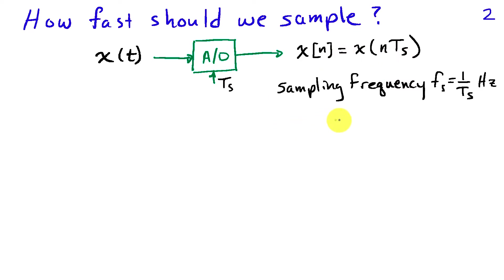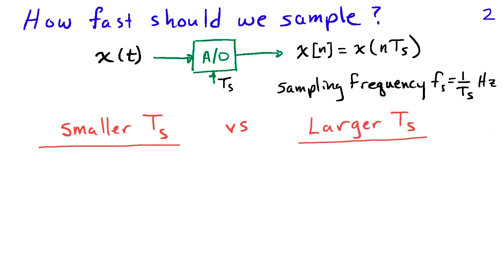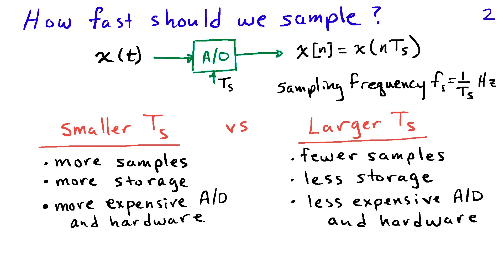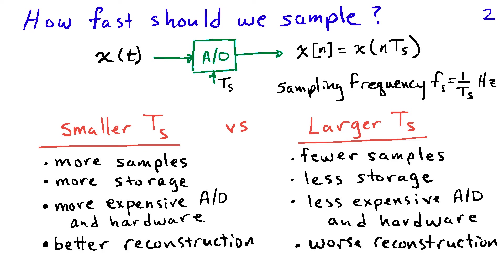We can define the sampling frequency f_s as the inverse of the sampling interval, with units in Hertz provided T_s is in seconds. We get to choose the sampling interval and there are trade-offs involved. A smaller sampling interval gives more samples for a given amount of time, requiring more storage, while a larger interval means fewer samples and less storage. A smaller T_s also generally requires a more expensive analog to digital converter and other hardware, but makes reconstruction easier.